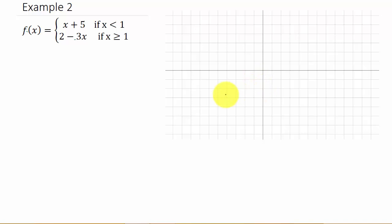The only difference is when you graph this one, when you make your table out and choose your x values to plug in to get your y values, you can only choose x values less than 1 for this one. And for this one, you can only choose x values greater than or equal to 1.